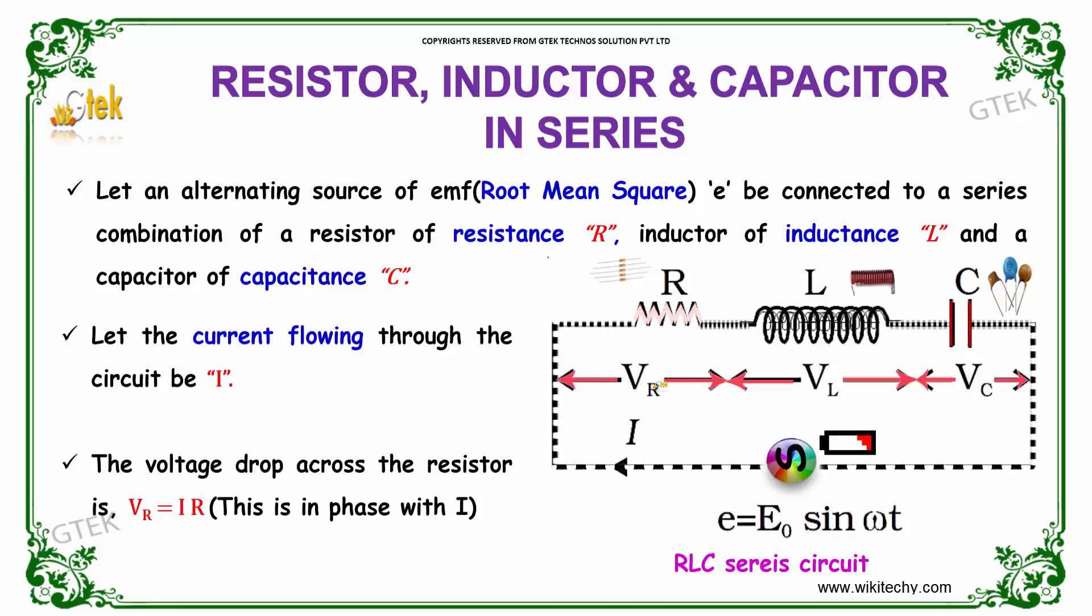The voltage drop across the resistor is VR is equal to I into R. This is in phase with I.